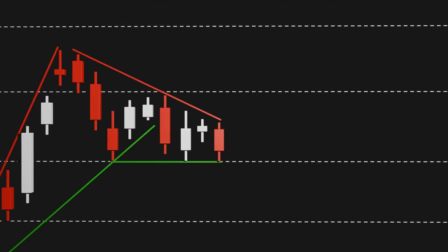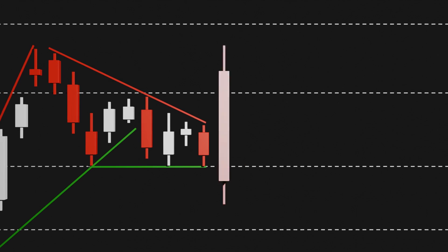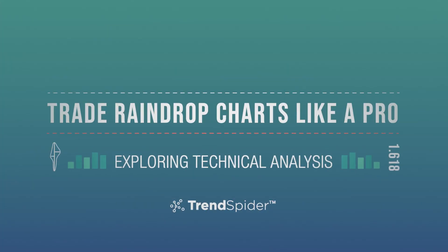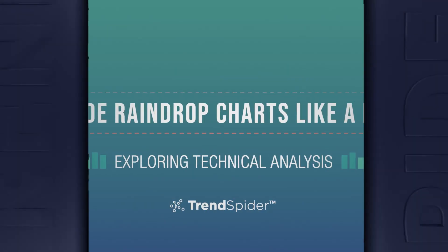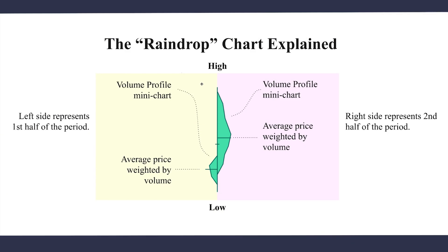The S&P 500 and NASDAQ closing at all-time highs, the Dow up, gold up, real estate. Hey everybody, Jake here with TrendSpider to do another technical analysis series video on raindrops and what exactly is a raindrop.